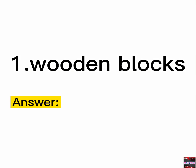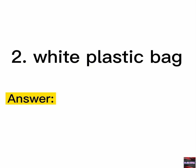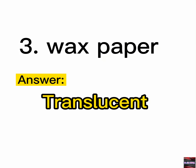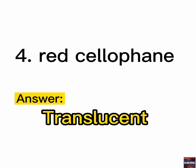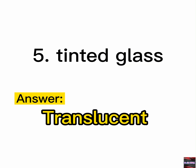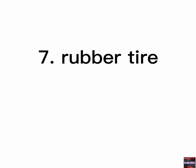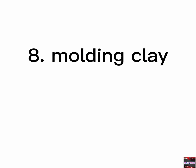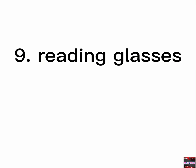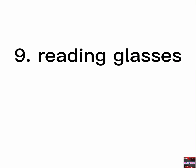Let's check. 1. Wooden blocks — Opaque. 2. White plastic bag — Transparent. 3. Wax paper — Translucent. 4. Red cellophane — Translucent. 5. Tinted glass — Translucent. 6. Brown envelope — Opaque. 7. Rubber tire — Opaque. 8. Molding clay — Opaque. 9. Reading glasses — Translucent. 10. Wood — Opaque.